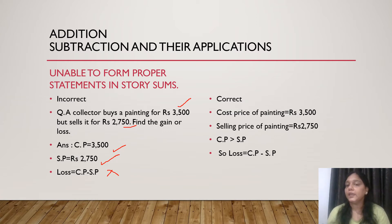Cost price of painting is Rs. 3500. Selling price of painting Rs. 2750. As we can see that CP is greater than SP. So it will go to loss. The correct formula of loss will be CP minus SP. By this format they can get their answer.